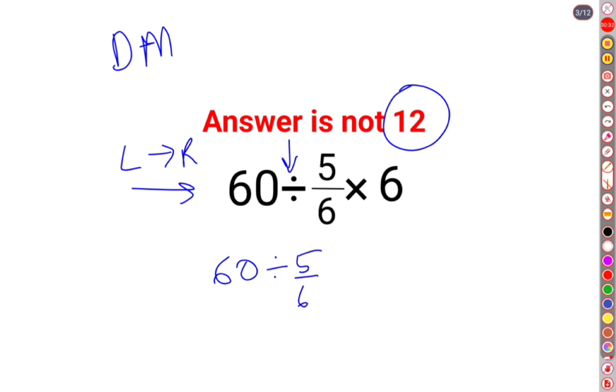Now, whenever you have division, you need to follow the rule of KCF where K stands for keeping the first number as it is. C stands for changing the division sign to multiplication.